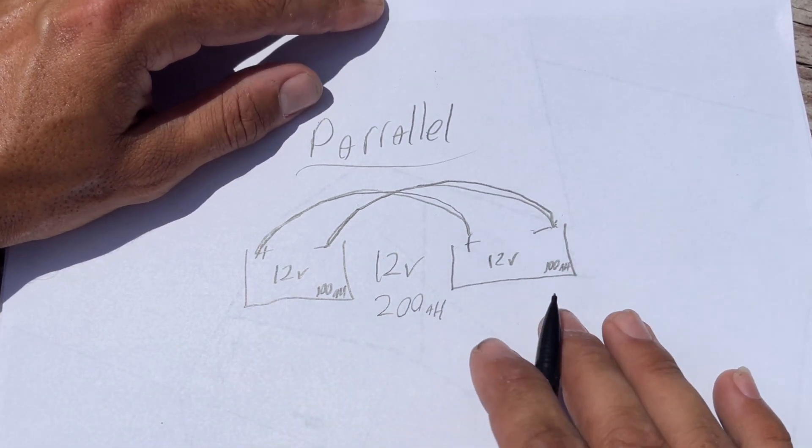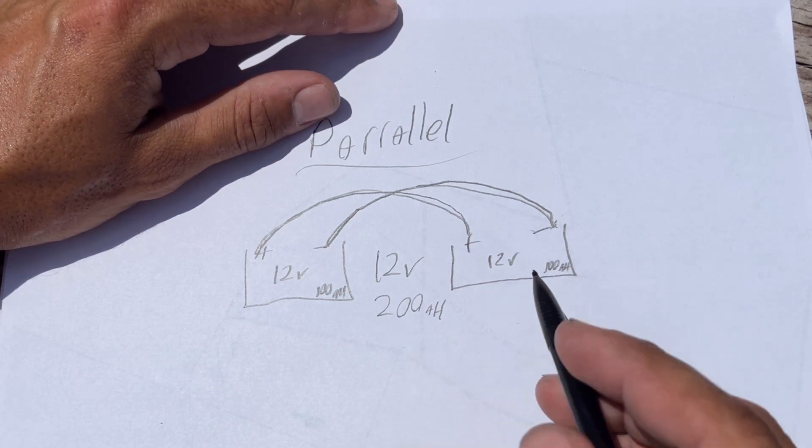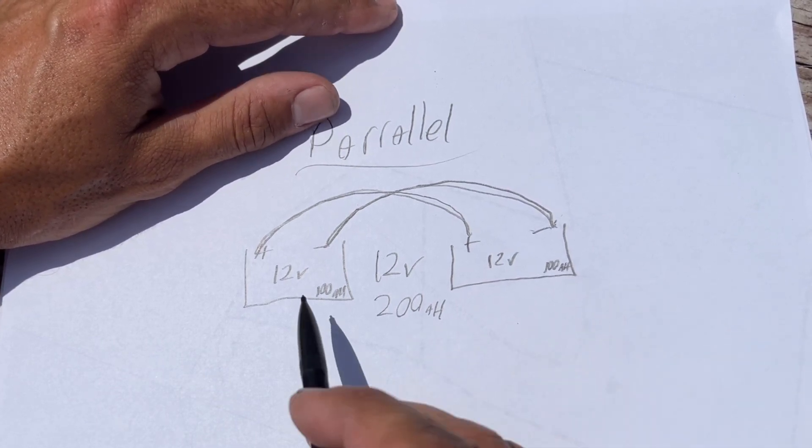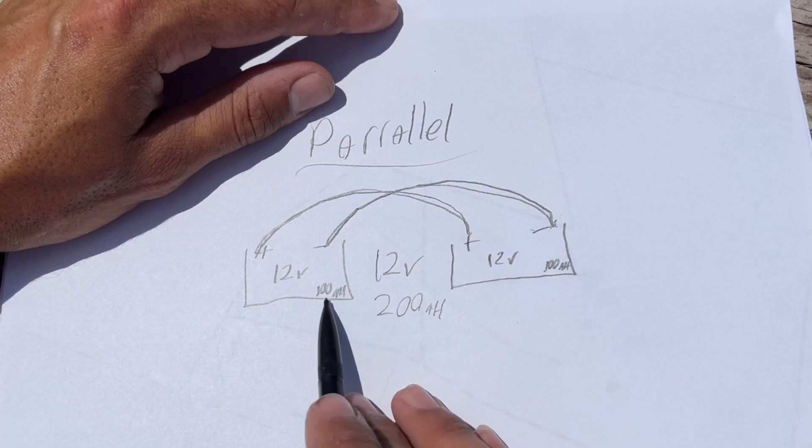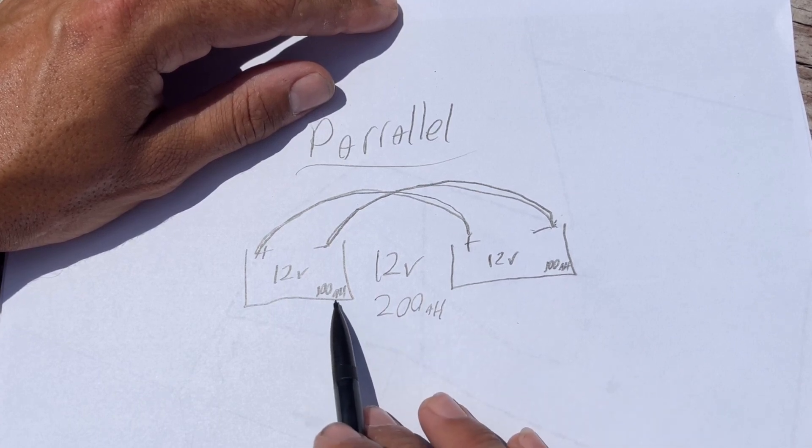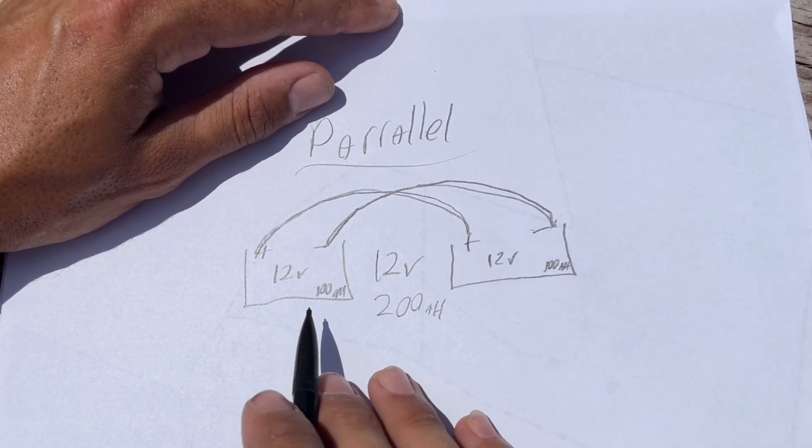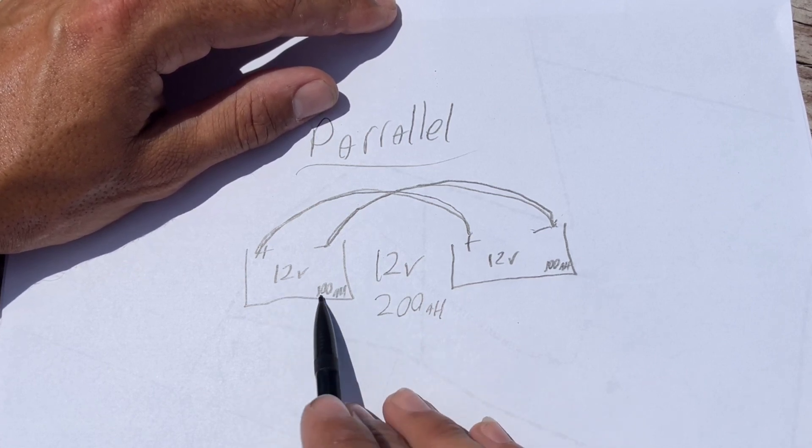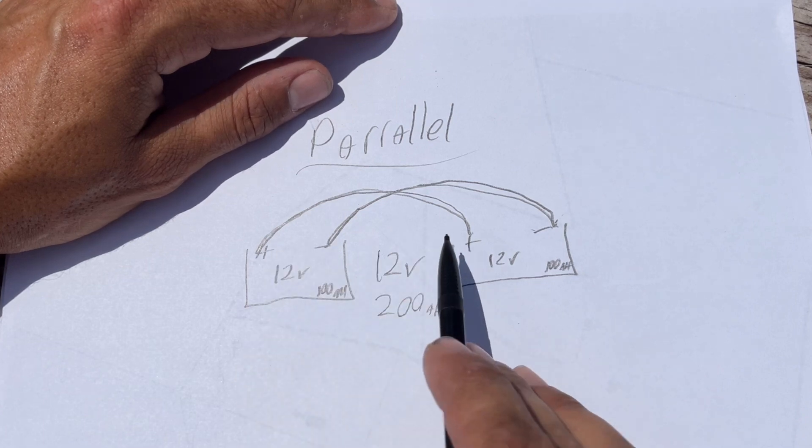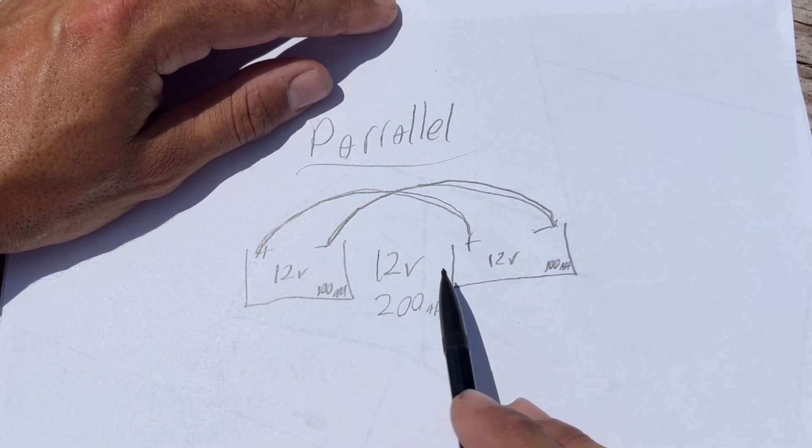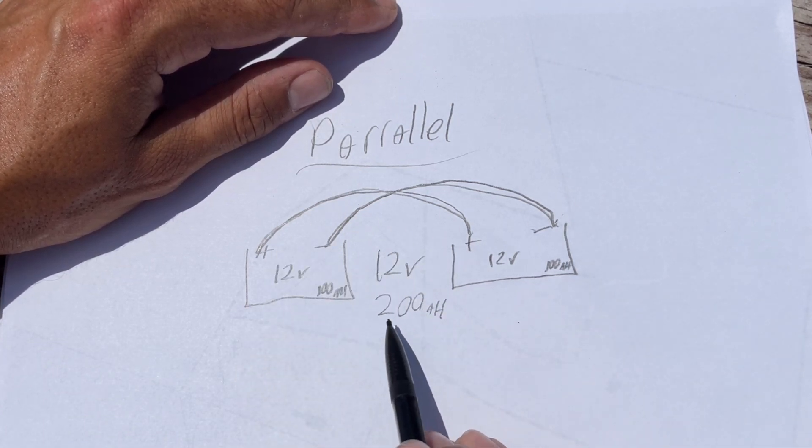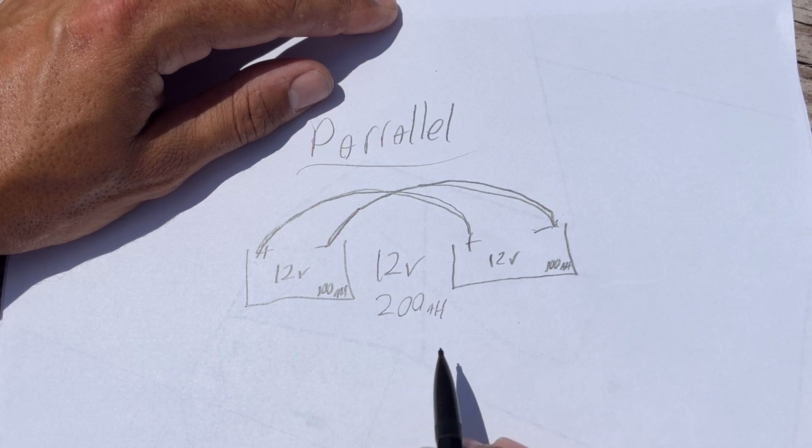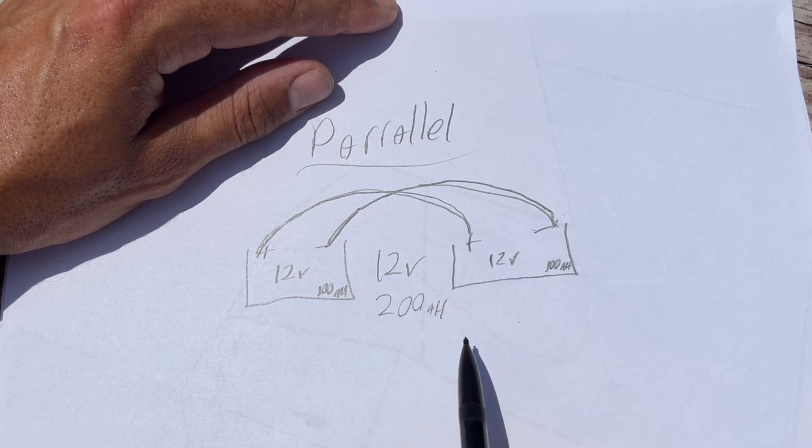Now, this exact same thing with both the parallel and the series applies to batteries, solar panels, applies to anything that's on a DC circuit because let's say these were solar panels, and these were 12-volt 100-amp solar panels, which is not realistic, but this is just for numbers sake. So a 12-volt 100-amp solar panel, and again, you connected the positives together and the negatives together, you would have a 12-volt 200-amp output solar panel set.